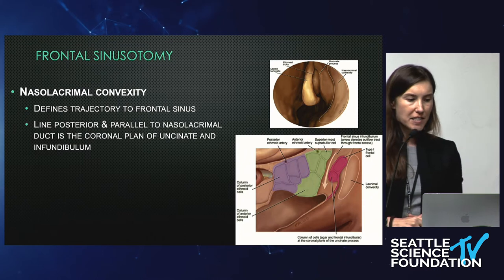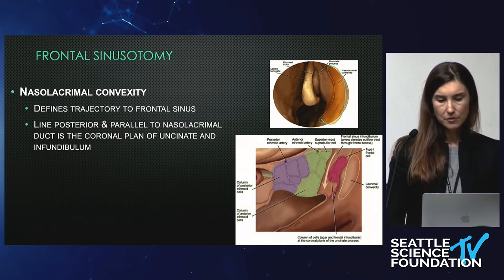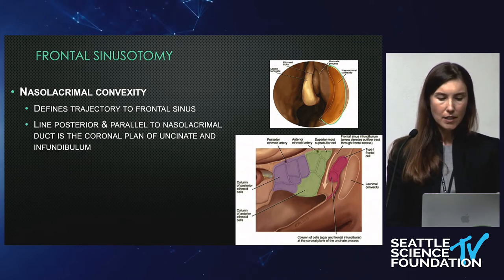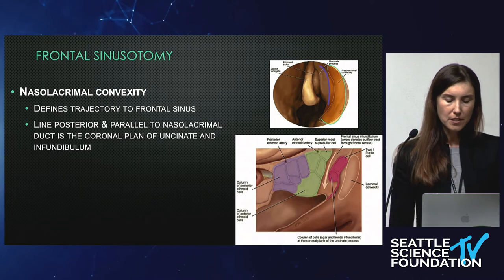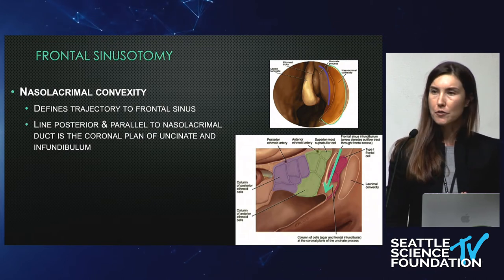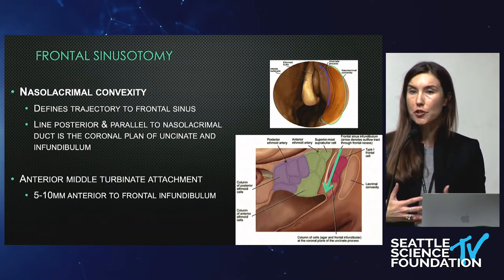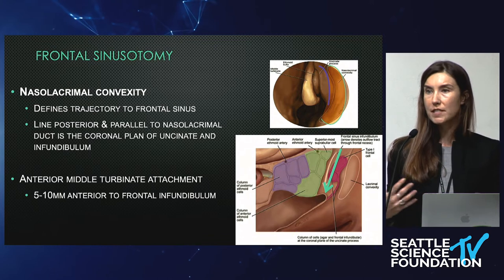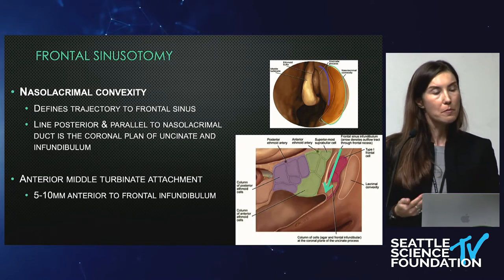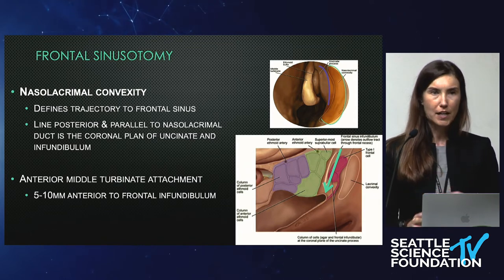The last thing to talk about is your frontal sinusotomy. Here you're using the nasal lacrimal convexity, which defines the trajectory to the frontal sinus — shown here in orange. A line posterior and parallel to this gives you the nasal lacrimal duct, which is in the coronal plane of the uncinate and the infundibulum, and that helps you define where your frontal sinus is. Also, if you have your middle turbinate or at least part of the middle turbinate attachment, the anterior middle turbinate attachment is five to ten millimeters anterior to your frontal infundibulum — so you can work a half centimeter to a centimeter back and expect to find that entrance.